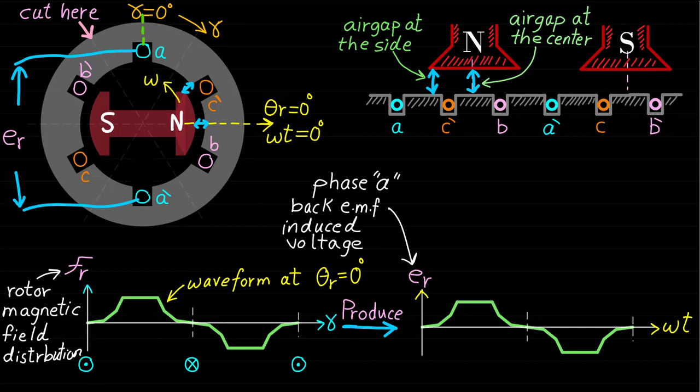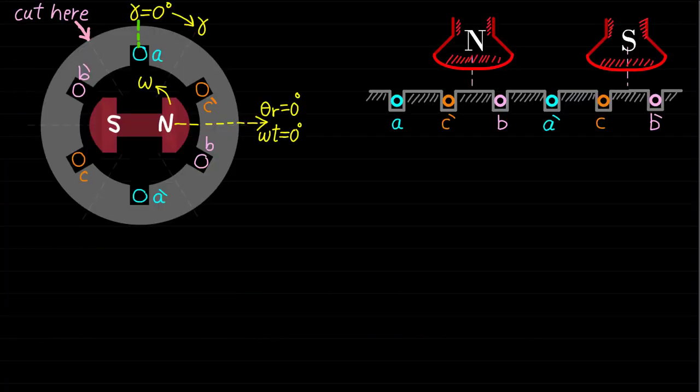Note that we assumed before that these waveforms are sinusoidal waveforms. Now, to improve the trapezoidal waveforms of the rotor magnetic field distribution and the induced back EMF voltage and achieve waveforms close to sinusoidal, the salient pole rotor can be redesigned as shown. As we can see, with this new rotor design, the air gap between the rotor and the stator is not the same under the area of the pole face.